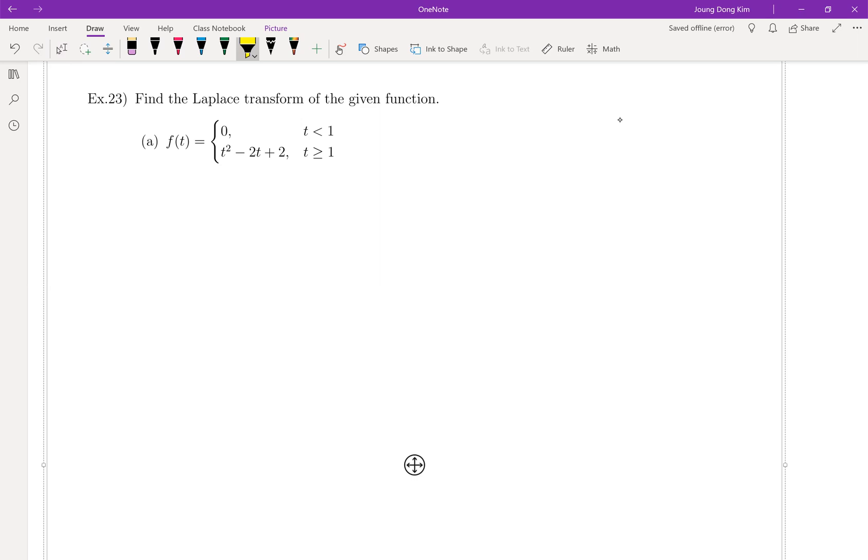So what are we going to do? We're going to try to write this one in terms of unit step function. Which is equal to... like this is usually the body. Let me write the second one. u1(t) times t squared minus 2t plus 2. That's it, right?